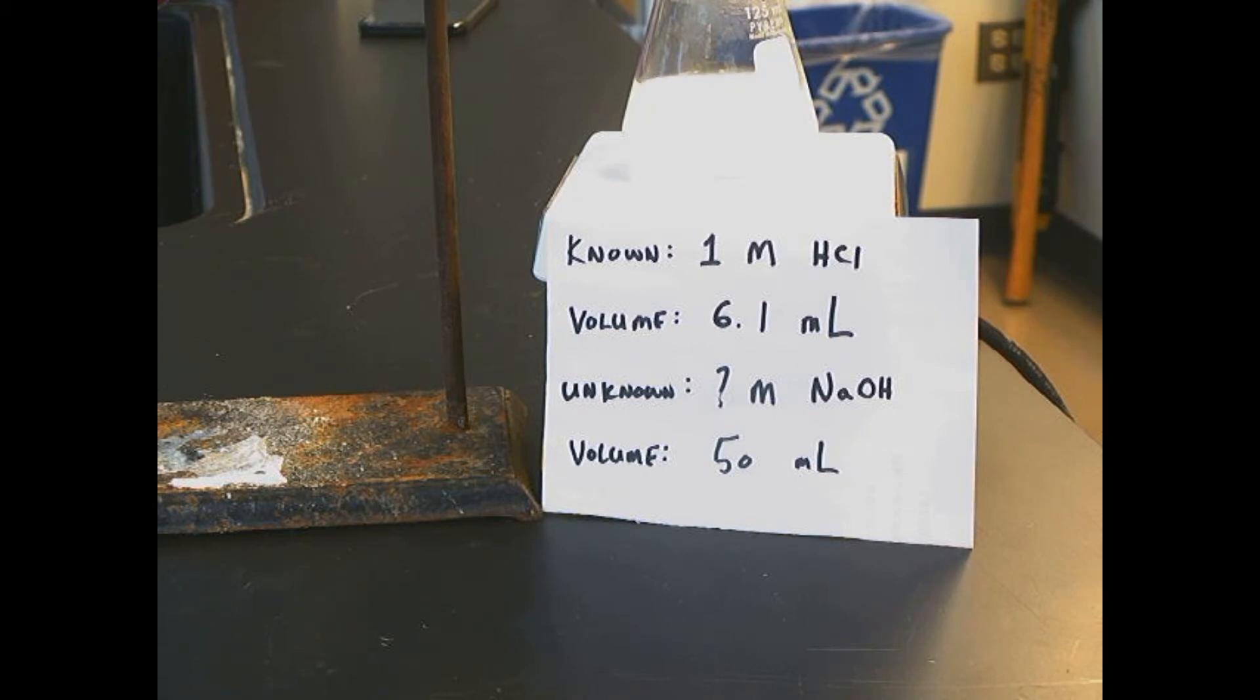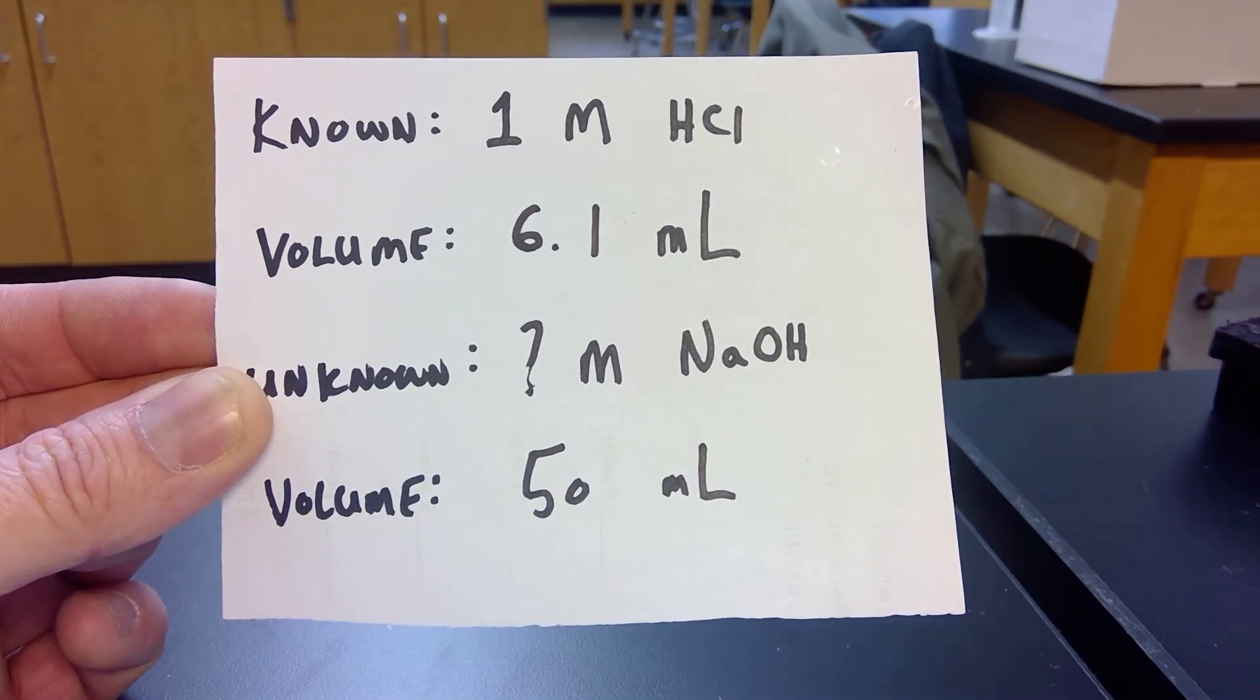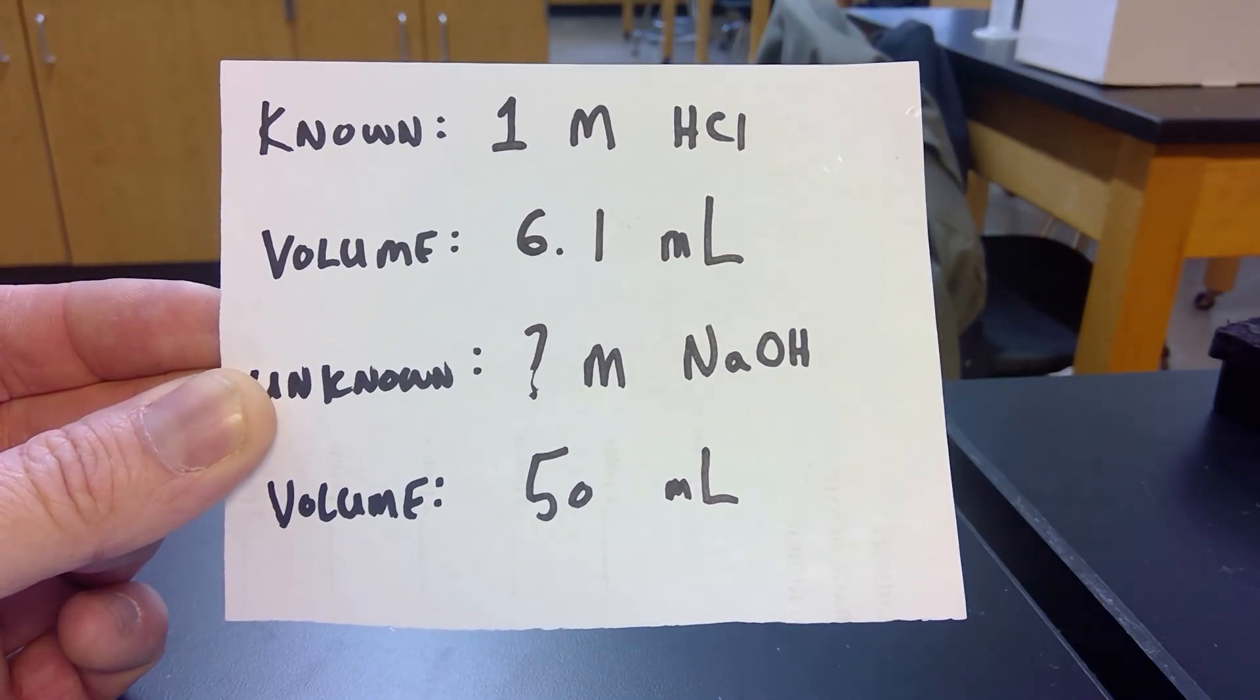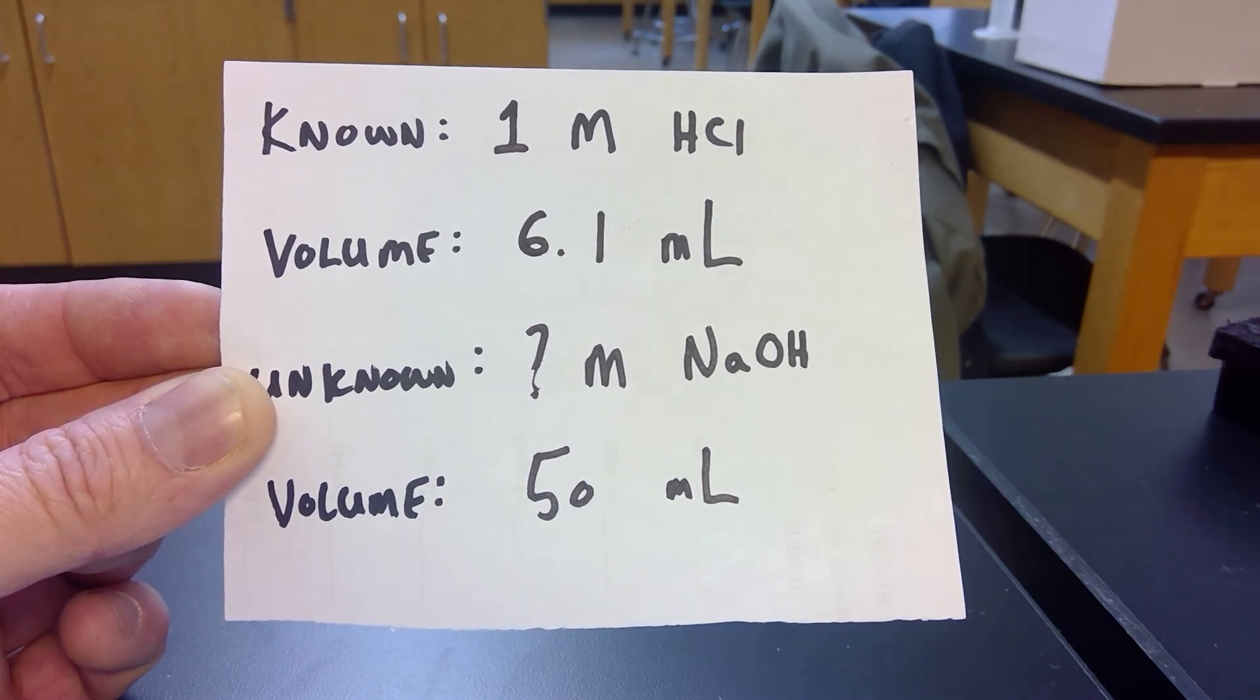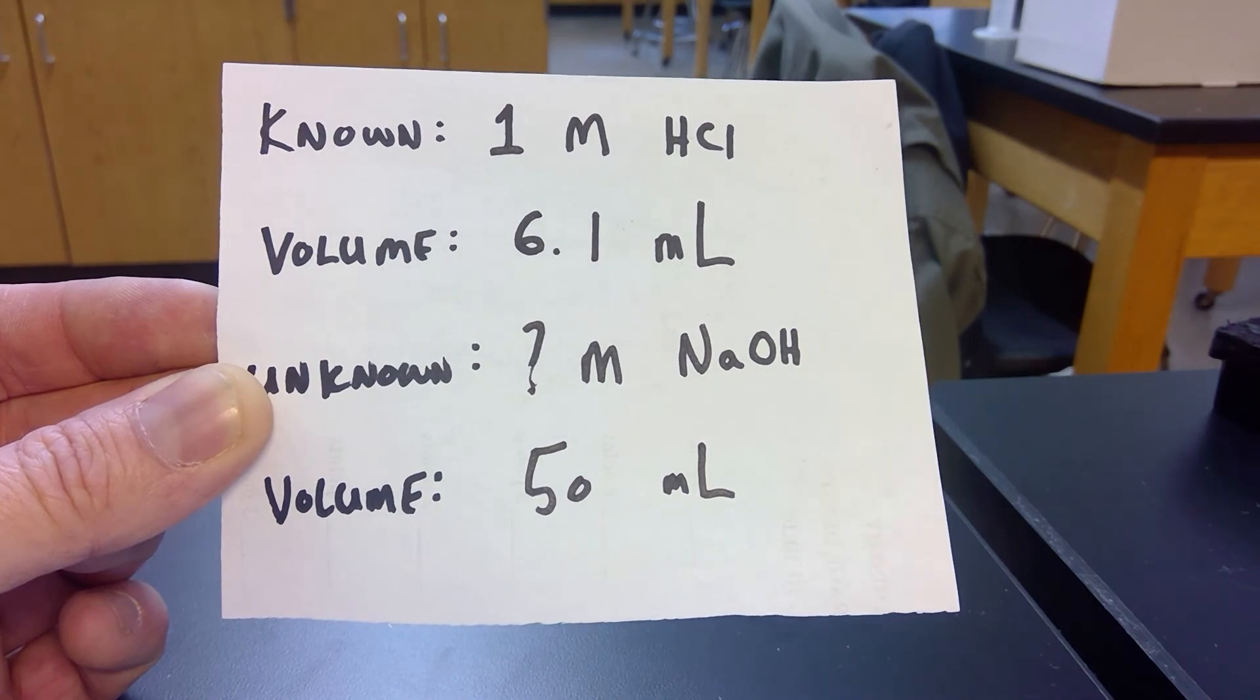So let's set up the titration calculations and solve for the unknown. Here's what we know. 1 molar hydrochloric acid required 6.1 milliliters to titrate our 50 milliliters of unknown concentration sodium hydroxide.